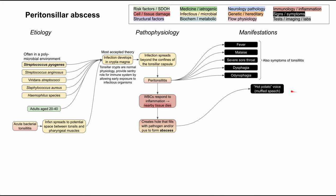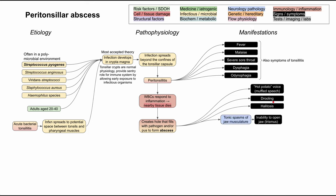These symptoms are more specific for peritonsillar abscess: you can have a hot potato voice, which is a classic way of saying muffled speech. You can also have drooling and halitosis — halitosis means bad breath. It makes sense that you have bad breath when bacteria is growing inside a hole in your mouth. It also messes up your swallowing, and if you have pain with swallowing, drooling follows. Another characteristic symptom is tonic spasms of the jaw musculature — because of the infection and inflammation, your jaw musculature is constantly spasming, making it harder to open your mouth. This is called trismus, and it's less common in tonsillitis, making it more specific to peritonsillar abscess.